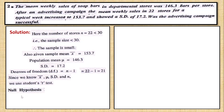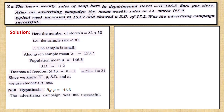For the t-test, the null hypothesis H₀ is: the population mean mu equals 146.3 — meaning the advertising campaign was not successful. The alternative hypothesis H₁ is: mu is greater than 146.3 — meaning sales increased, so the advertising campaign was successful.